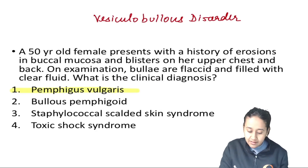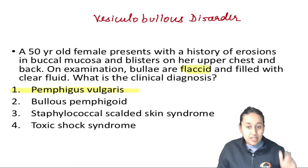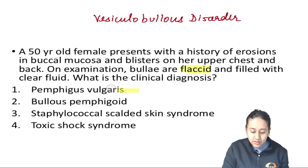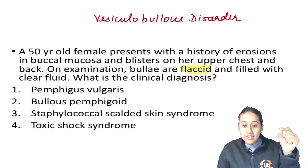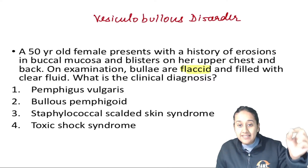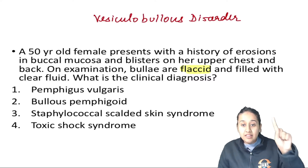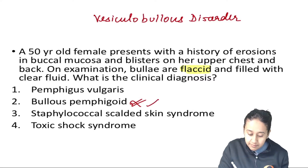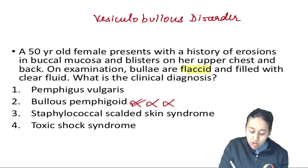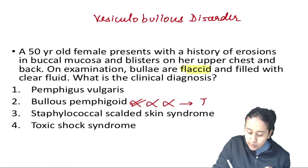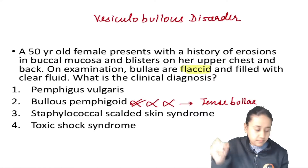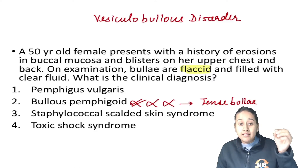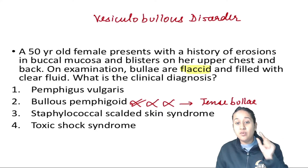The question clearly mentions flaccid bulla. We can easily rule out bullous pemphigoid, because in bullous pemphigoid the level of split is at the basement membrane and you will get a tense bulla. So bullous pemphigoid can never be the answer here.